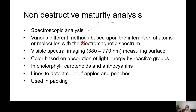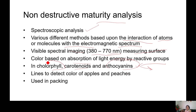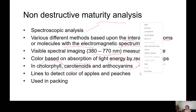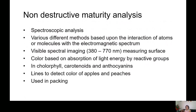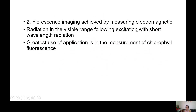Non-destructive maturity analysis also includes spectrophotometric analysis. There are various methods based completely on the interaction of atoms or molecules with the electromagnetic spectrum. Visible spectral imaging operates in the range of 380 to 770 nanometers, measuring the surface color based on absorption of light energy by reactive groups — for example, chlorophyll content, carotenoid content, and anthocyanin content will vary. Anthocyanin content varies in grapes or pomegranate; carotenoid content varies in carrots at different maturity stages; chlorophyll content varies in coriander leaves, spring onion, or green onion. Fluorescence imaging measures electromagnetic radiation in the visible range following excitation with short-wavelength radiation, with its greatest application in the measurement of chlorophyll.